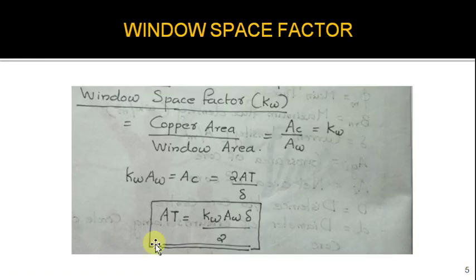This is the total area of copper. Then window space factor k_w is copper area by window area, A_c by A_w. Then A_c equals k_w A_w.